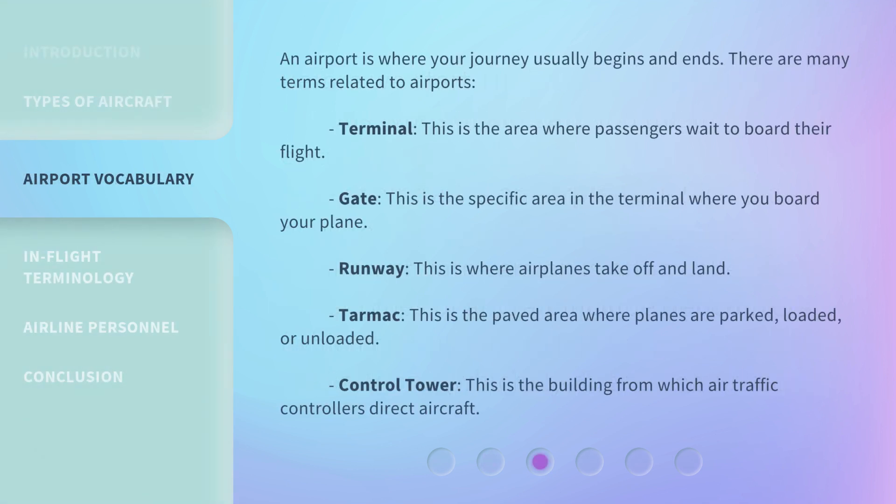An airport is where your journey usually begins and ends. There are many terms related to airports. Terminal: this is the area where passengers wait to board their flight. Gate: this is the specific area in the terminal where you board your plane.